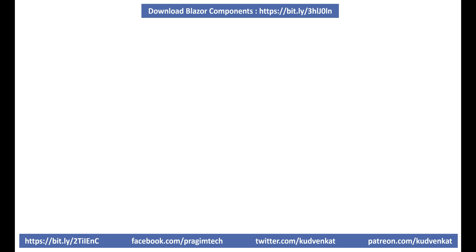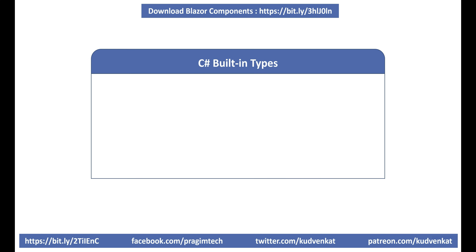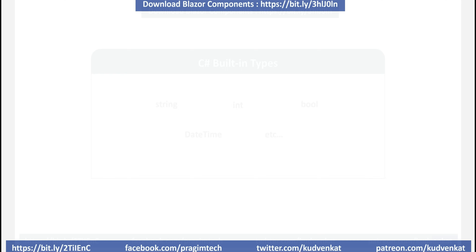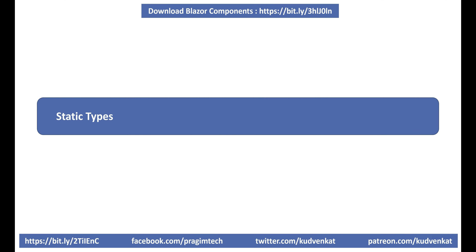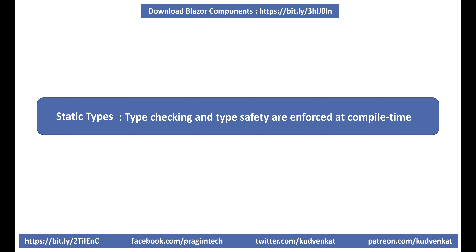In C#, we have several built-in types like string, int, bool, datetime, etc. All these are static types, meaning type checking and type safety are enforced at compile time.